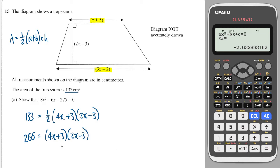Then I'm going to expand these brackets, and that's going to give me 266 equals 8x squared minus 12x plus 6x minus 9.